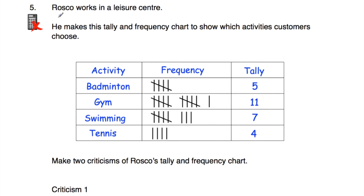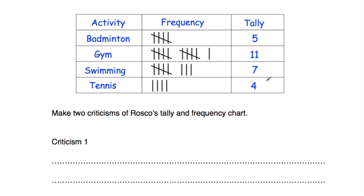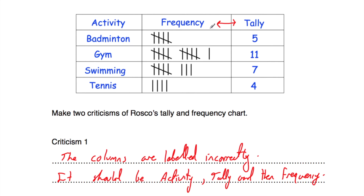Question number five. Roscoe works in a leisure centre and he makes a tally and frequency chart showing the activities that customers choose: badminton, gym, swimming or tennis. We've been asked to write two criticisms of Roscoe's tally and frequency chart. Looking at the headings — activity, frequency, then tally — these two headings are the wrong way around. It should be activity, then tally, then frequency. So criticism one: the columns are labelled incorrectly.